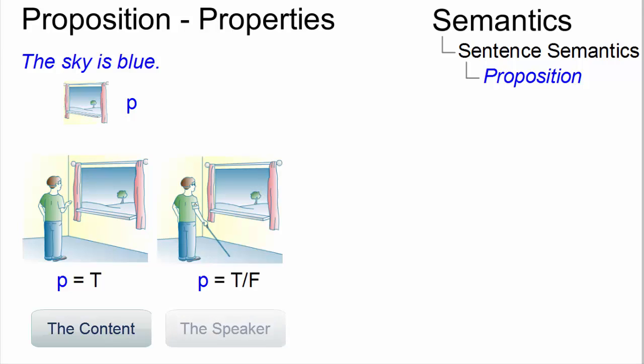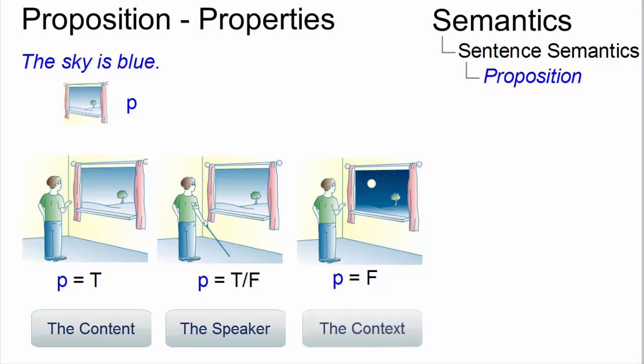The speaker who utters the sentence. This proposition may be true, but what if a blind speaker utters this sentence? The temporal and local context within which the sentence is uttered. This proposition is only true if the sentence is uttered during daytime.